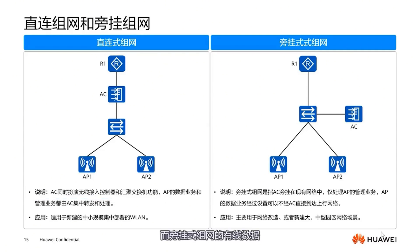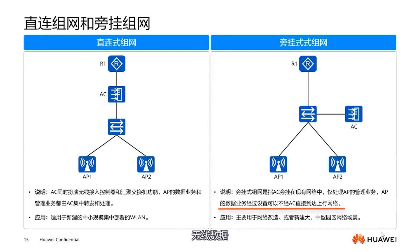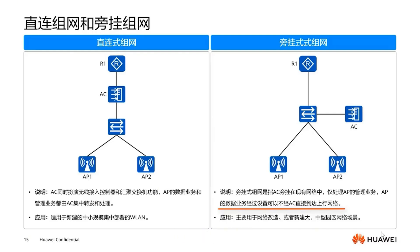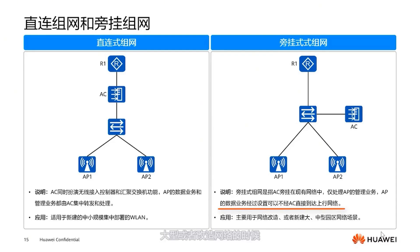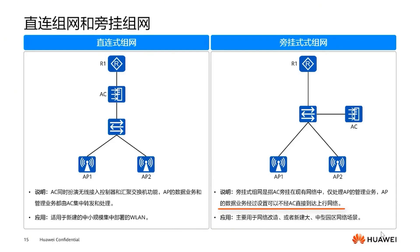In bypass networking, wired data does not pass through the AC. Also, wireless data can bypass the AC, meaning the AC only acts as a manager. Generally speaking, small to medium networks use direct connect, but for large or revamped networks, we would use bypass.